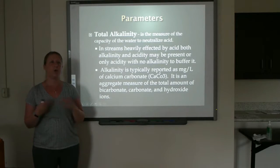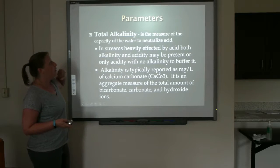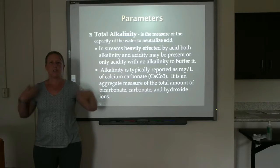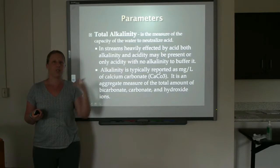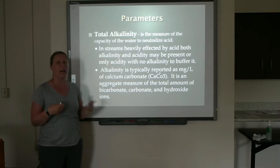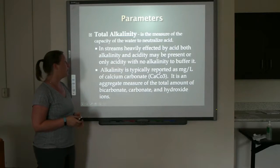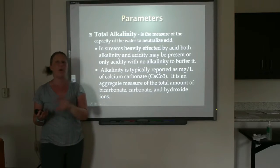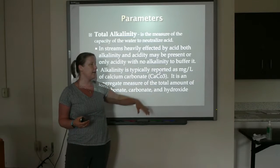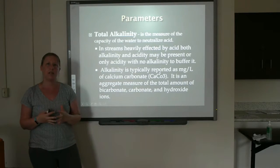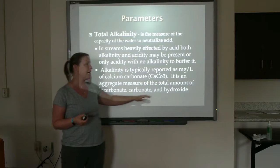Total alkalinity is an important parameter, especially in acid-stressed watersheds. Total alkalinity is the measure of a water's ability to neutralize acid, and we measure it through titration by seeing how much acid it takes to reach a certain pH. In streams heavily affected by acid, alkalinity and acidity could both be present if the system's not in equilibrium, or we may see only acidity with no alkalinity to buffer it. We report it as milligrams per liter as calcium carbonate (CaCO₃), which is a standardized unit that aggregates the measure of all the different alkaline compounds in the water — specifically an aggregate of bicarbonate, carbonate, and hydroxide ions.